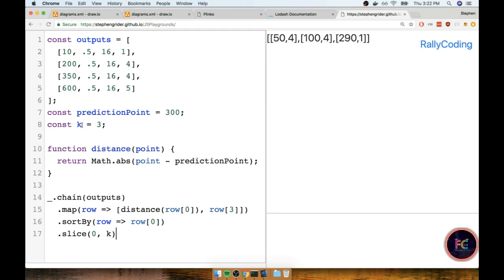Now you'll notice that we only have three entries at this point in time. These are the three most similar records to the point that we're trying to predict of the 300 pixel point. Now this section is getting a bit long, so let's take a quick pause right here and continue in the next section.